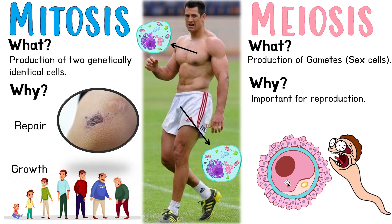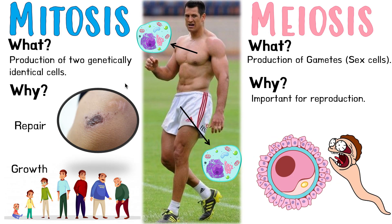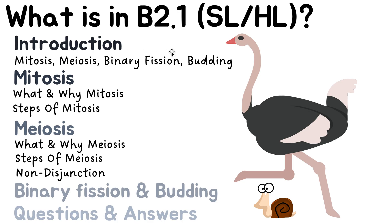So we've now overviewed the four things we need to learn about: mitosis, meiosis, binary fission, and budding. Don't worry too much about binary fission and budding — there's very little we'll need to know about them later in this video. Now that we've done the intro, let's go into the nitty-gritty details. We finish the intro section — let's go into mitosis.